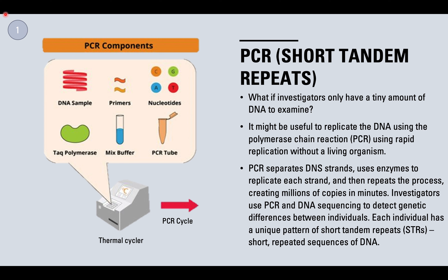Number one of your seven components is PCR, which uses short tandem repeats. What if investigators only have a tiny amount of DNA to examine? For example, in a true crime investigation, investigators may collect DNA but only have a small amount. It might be useful to replicate that DNA using polymerase chain reaction — PCR — which uses rapid replication without a living organism. PCR separates DNA strands, uses enzymes to replicate each strand, and repeats that process, creating millions of copies in just minutes.